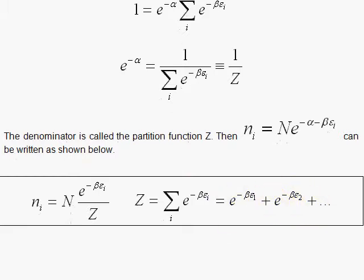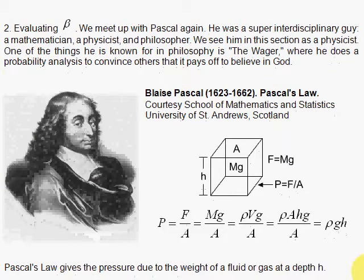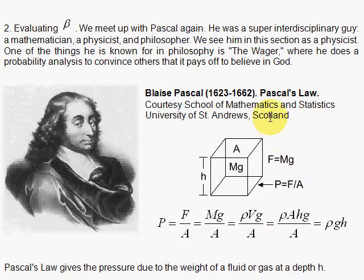Let's go on and evaluate beta. That brings us to Pascal, and here we see Pascal in physics with his Pascal's law. We have seen Pascal in mathematics with his Pascal's triangle, and Pascal is also known in philosophy. For example, in humanities, we study the wager, where he uses probability to convince others that it pays off to believe in God.